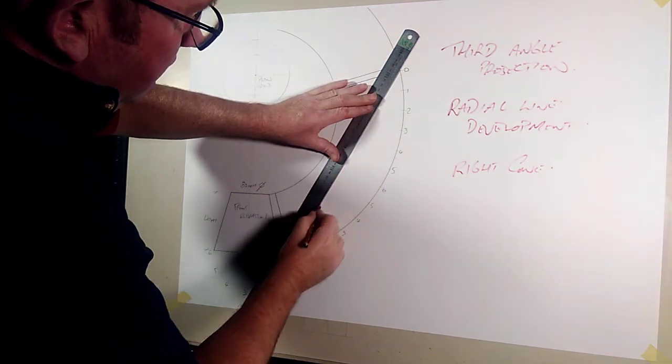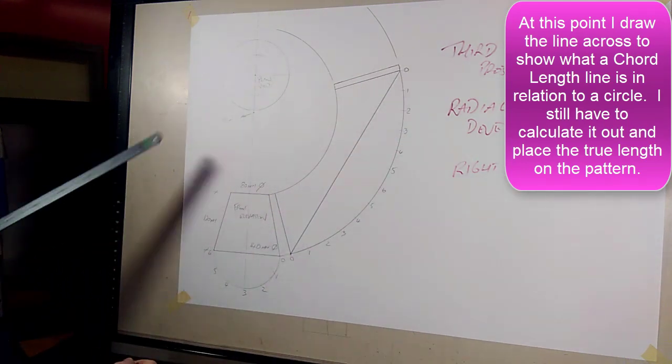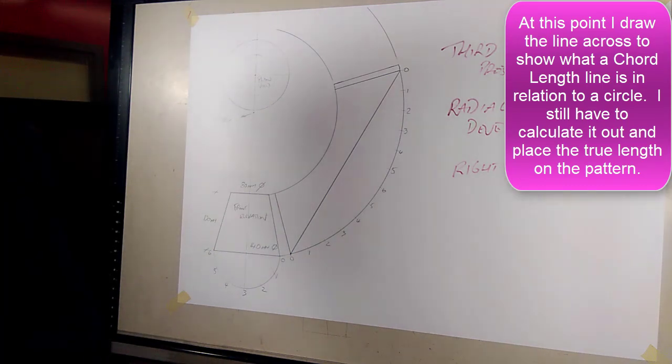So if I draw that line in across there, that is a chord length. It's a straight line length across a circle. So how do we determine the chord length on this one? I have done it in other videos.